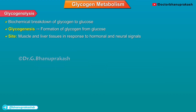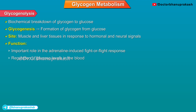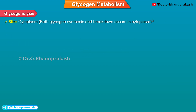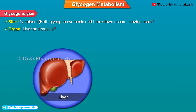In particular, glycogenolysis plays an important role in the adrenaline-induced fight-or-flight response and the regulation of glucose levels in the blood. It takes place in the cytoplasm — both glycogen synthesis and breakdown occur here. The organs where it takes place are the liver and muscle.